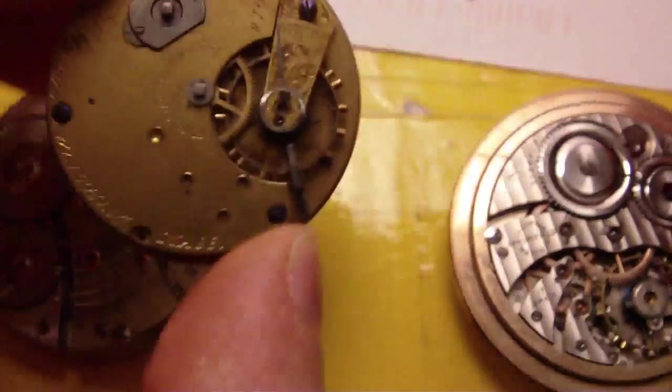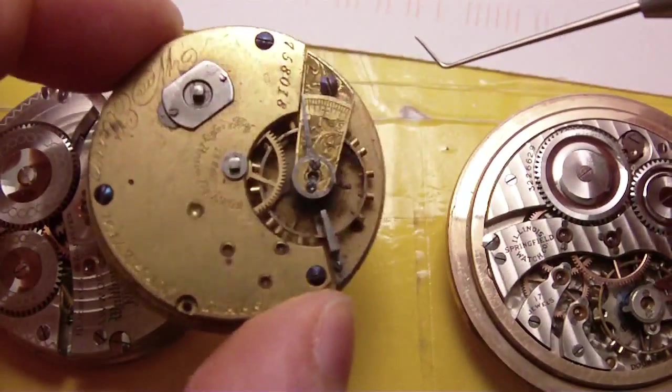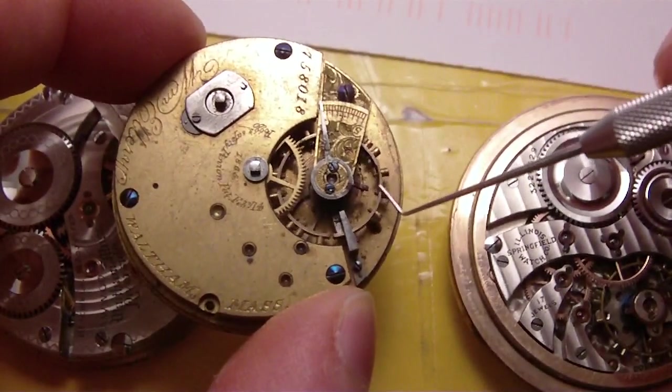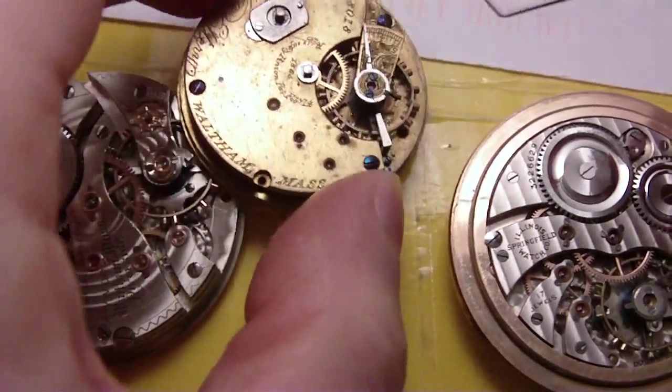Same thing with this one. Just when I move it, you can see it wobbles. This one also, broken balance staff. Could be. I know it is, but it could be.